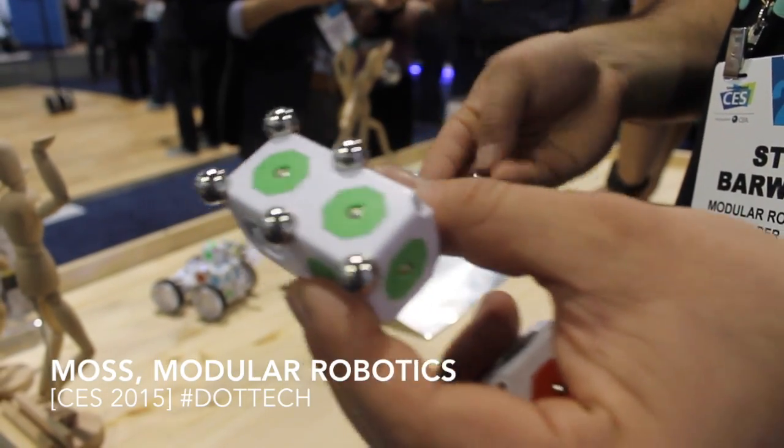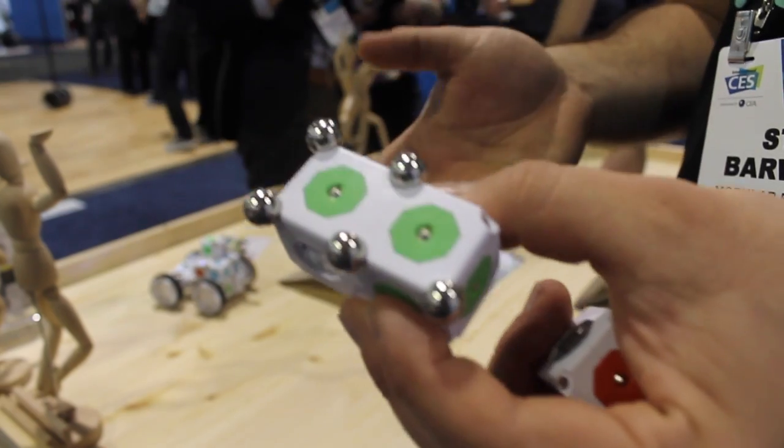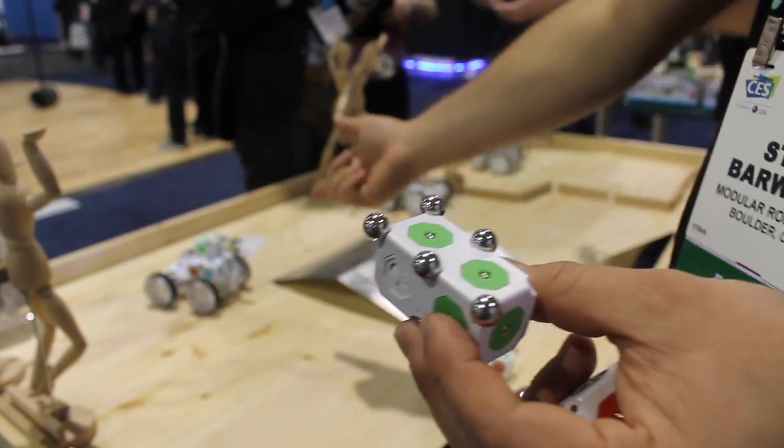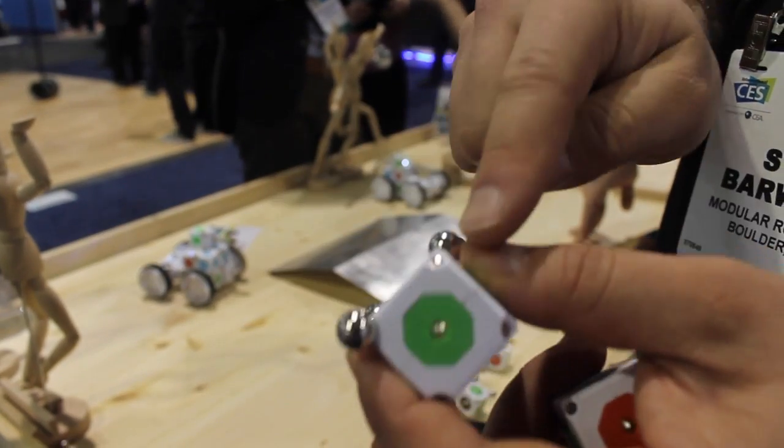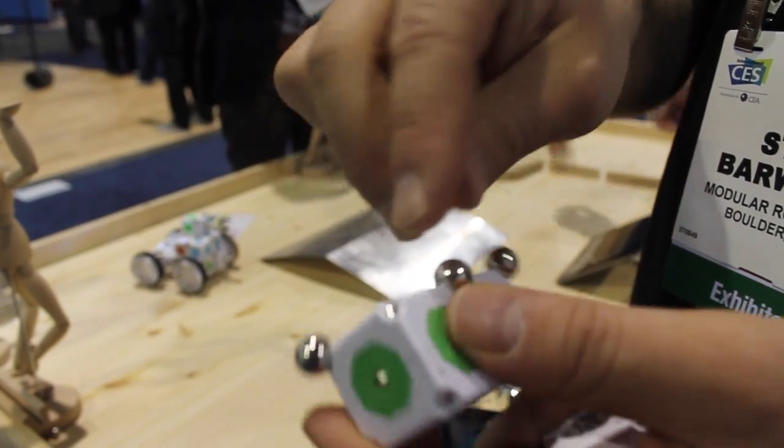You're looking at BOSS from Modular Robotics. It's a construction system that turns blocks into robots. The way we can do this is to use these little steel spheres to create connection points on our blocks.